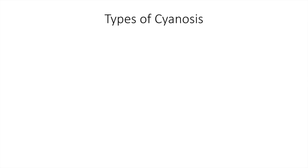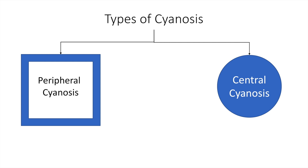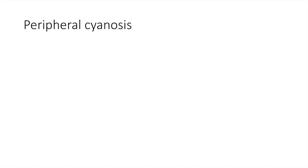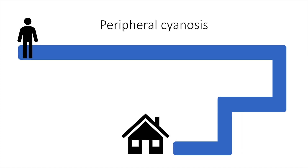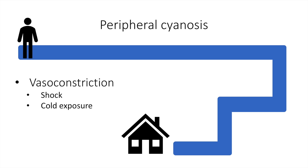Cyanosis may be either peripheral or central. To understand peripheral cyanosis, we'll make use of a simple graphic wherein a gentleman named Steve wants to go home. One reason why he won't be able to get home using the blue-colored road is if the roads are narrow. From a medical perspective, vasoconstriction, shock, and cold exposure may cause peripheral cyanosis.